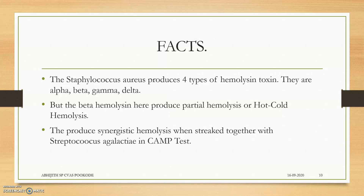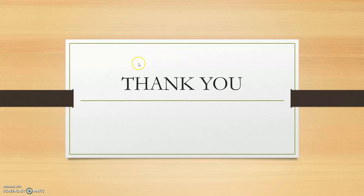An important fact: Staphylococcus aureus produces four types of hemolysin toxins — alpha, beta, gamma, and delta. The beta hemolysin here produces partial hemolysis, which is an irony since beta hemolysis is typically associated with a complete transparent zone. The Staphylococcus aureus beta hemolysin extracellular toxin actually produces only partial or hot-cold hemolysis. It produces synergistic hemolysis when streaked together with Streptococcus agalactiae in the CAM test — due to enhancement of RBC lysis by the CAMP factor produced by group B beta-Streptococcus agalactiae.